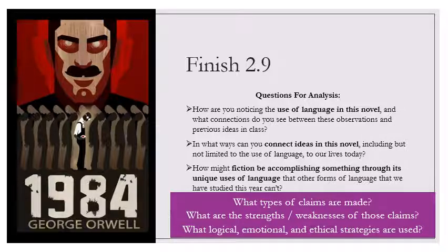They have been subdivided in many ways. They have borne countless different names and their relative numbers as well as their attitude toward one another have varied from age to age, but the essential structure of society has never altered. Even after enormous upheavals and seemingly irrevocable changes, the same pattern has always reasserted itself, just as a gyroscope will always return to equilibrium. The aims of these three groups are entirely irreconcilable.